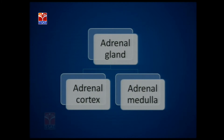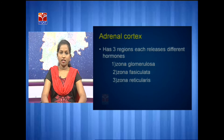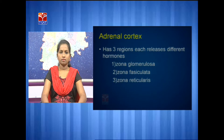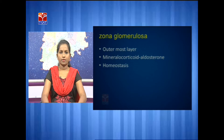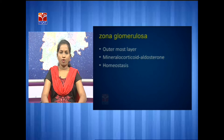The adrenal gland is divided into adrenal cortex and adrenal medulla. The adrenal cortex has three regions, where each region secretes different hormones. The three regions are zona glomerulosa, zona fasciculata, and zona reticularis. Zona glomerulosa is the outermost layer of the adrenal cortex, where the columnar cells secrete mineralocorticoids, which are involved in homeostasis.